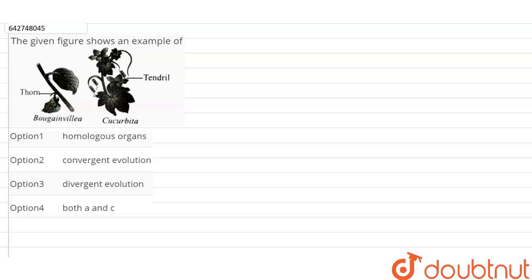In this question we have to observe the given figure and select our correct answer from the given options. Now here we can see two different plants have been shown.